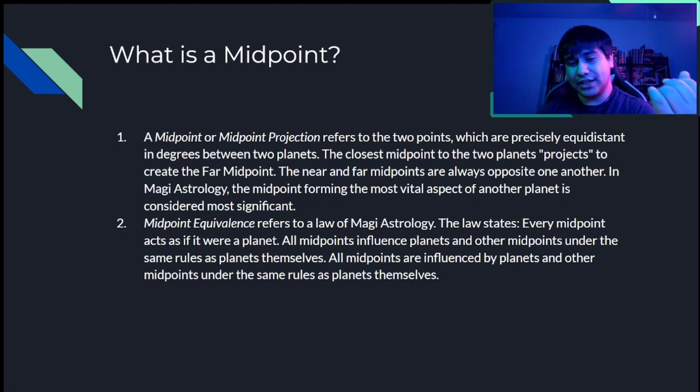Now, midpoint equivalence is essentially a rule or a law that states that every single midpoint will interact with other midpoints and celestial bodies, the exact same way a planet would interact with the others. So essentially, view a midpoint or treat it exactly like a planet, and of course, other midpoints when they interact with other midpoints, like other planets interacting with other planets, or other celestial bodies to be exact.